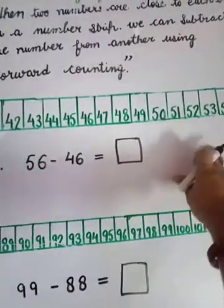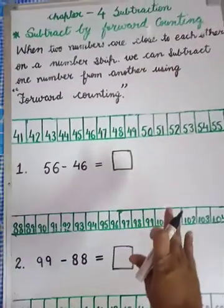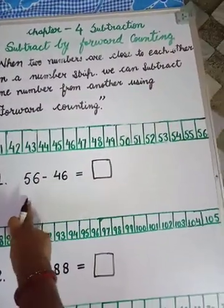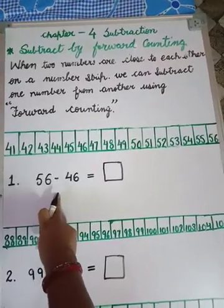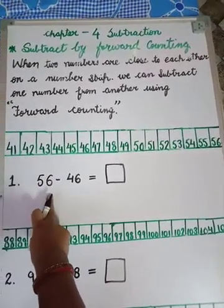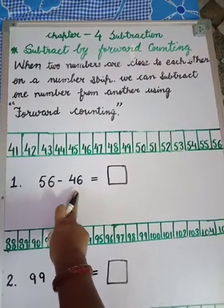Let's see, we have a number strip here, as you all see. First sum we have, suppose we subtract 46 out of 56. Okay, let's begin.